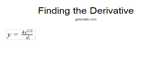Okay, so we're given y equals 4 times x raised to the 3 halves over x. So what we're going to want to do here is we're going to want to rewrite this, but I guess first I'm just going to say we want to find y prime.